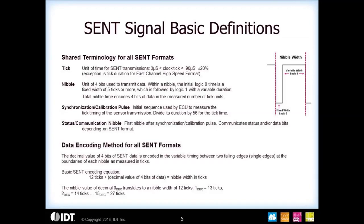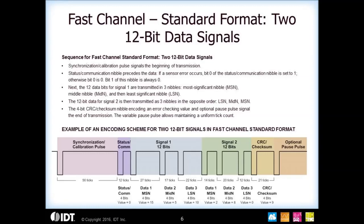Typically we would set the low time to six ticks, and then the high time would also be six ticks to represent all zeros. To represent a data value of one, you would increment to 13 ticks. Then for data two, it'd be 14 ticks, and so on — up to 27 ticks in the second nibble, which gives you a value of 15, or all ones.